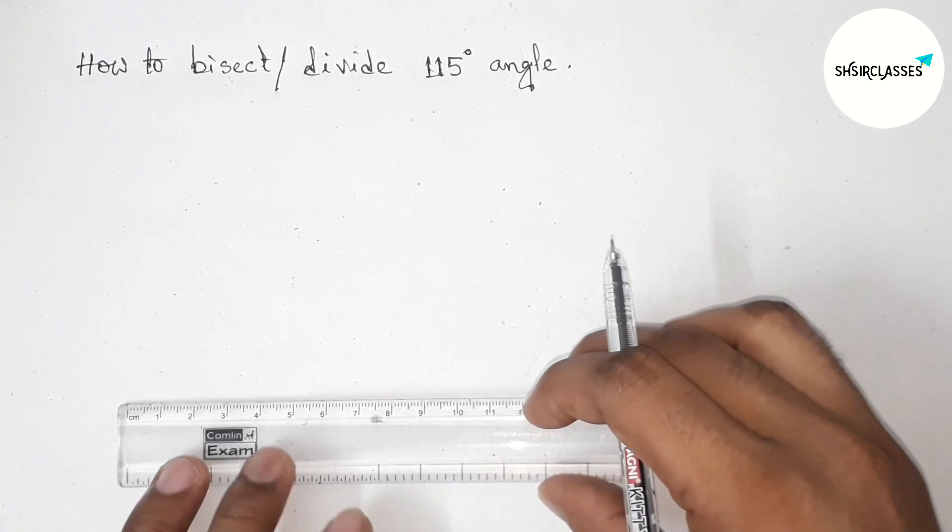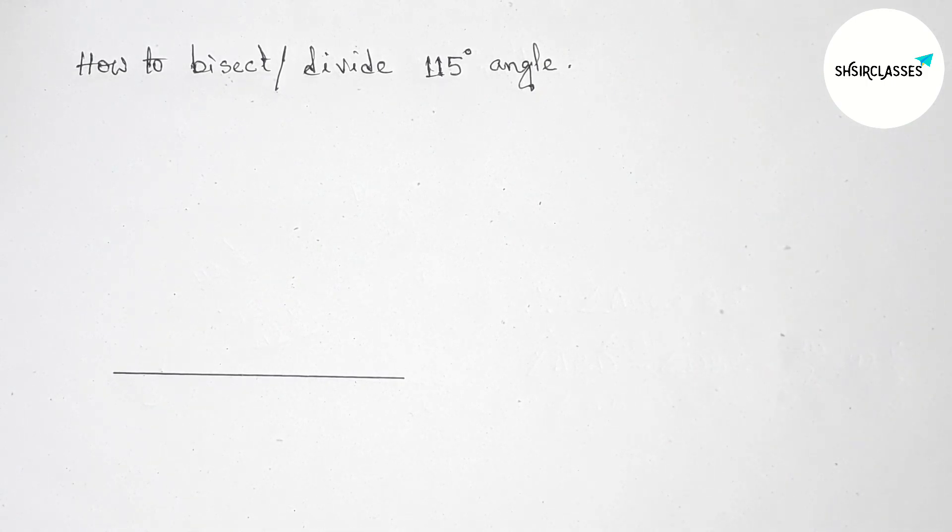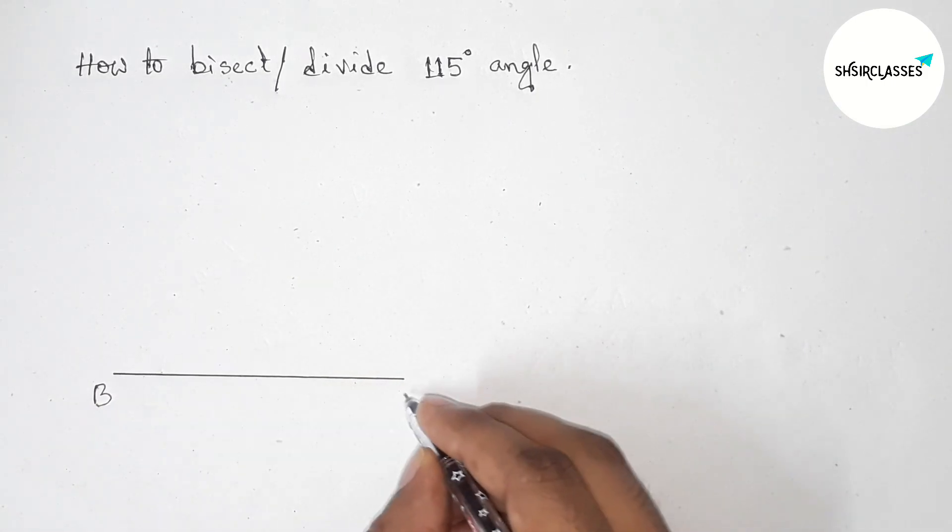First of all, let us draw the angle. So first drawing here a line segment, now taking point here B and here C.